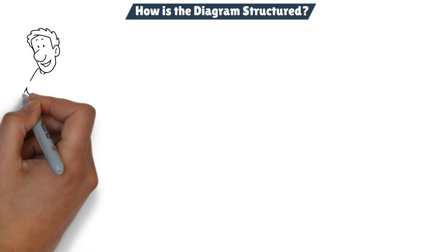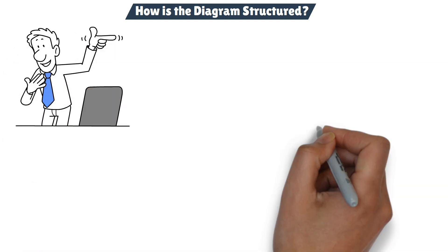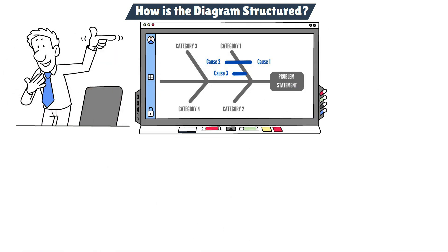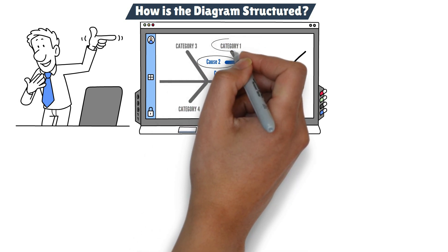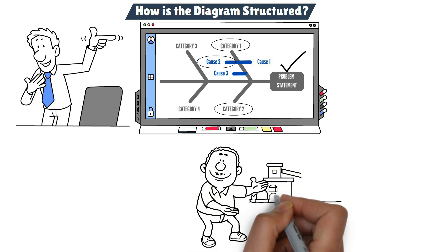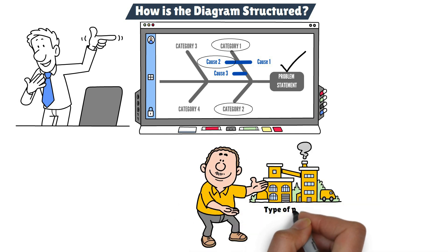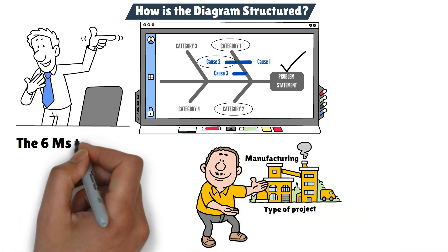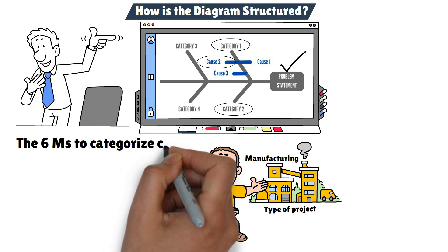Let's break down the structure of the Ishikawa diagram. The problem is written at the head of the fish, and the main causes branch off the spine. These causes are grouped into categories which are tailored to the type of project you're dealing with. For instance, in manufacturing-related projects, you might use the six M's to categorize causes.